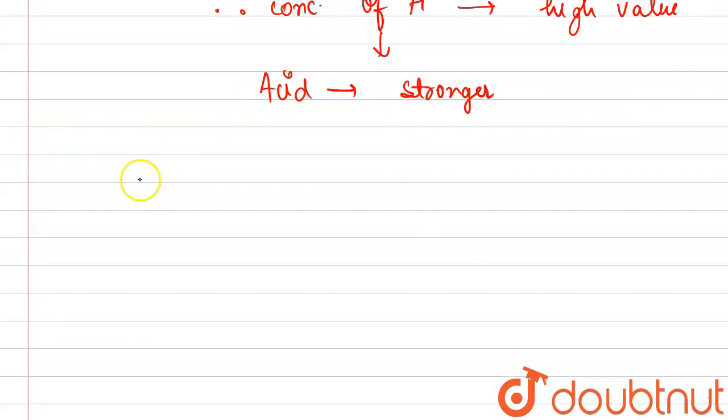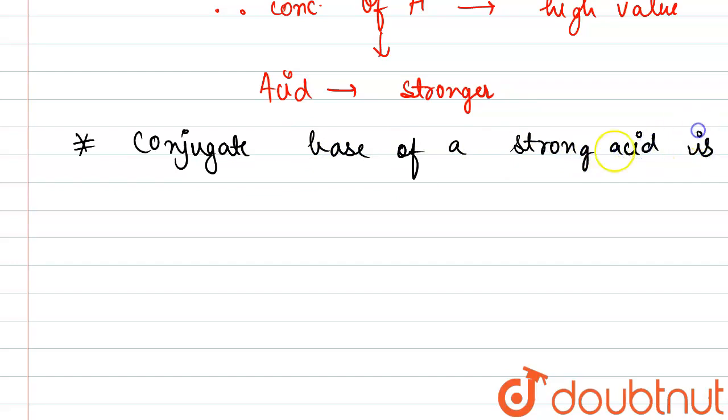The second point that is very important to remember: conjugate base of a strong acid will be showing the reverse nature, that is weak. So conjugate base of a strong acid is weak in nature. This point is very important to remember.